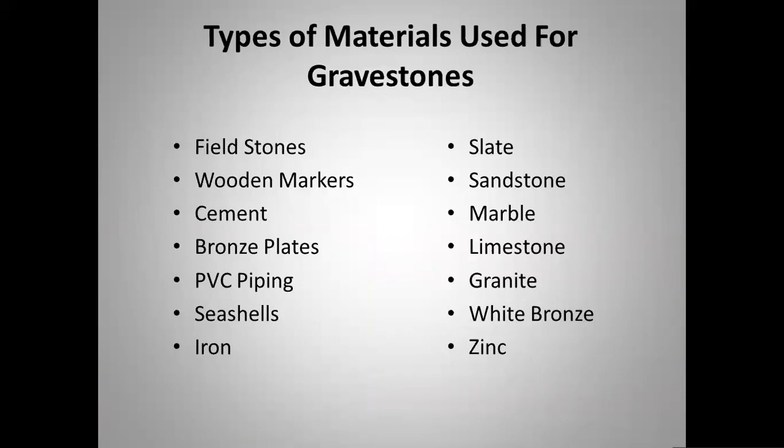These are the types of materials used for gravestones. Some aren't necessarily in use anymore, but you can still see them. Field stones are probably some of the first — just rocks placed in a mound to represent the grave. Wooden markers, such as wooden crosses, were left but rarely survive time. Cement was used in the mid-1900s when many people couldn't afford headstones, so they created their own by making frames, pouring cement, and carving the information.